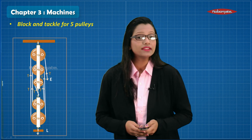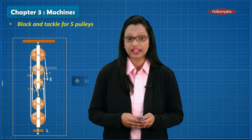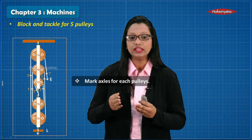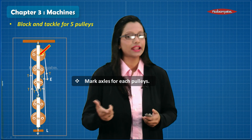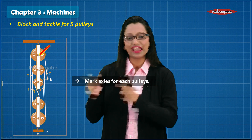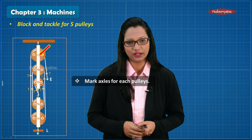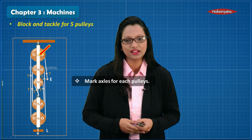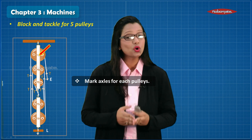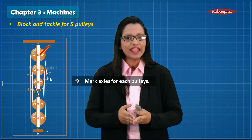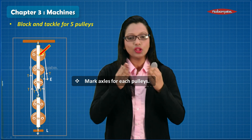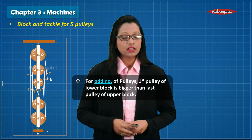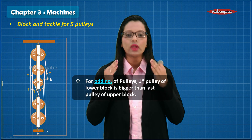The next thing that you guys actually forget to do after drawing the pulleys is highlighting the axles of the pulley. This enhances the diagram and shows a proper line in which all the pulleys are lying.